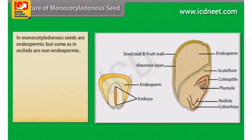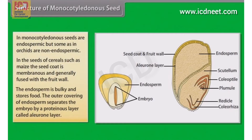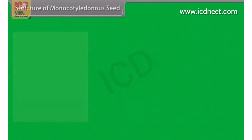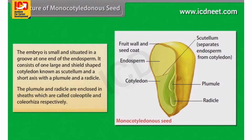Monocotyledonous seeds are endospermic, but some, as in orchids, are non-endospermic. In the seeds of cereals such as maize, the seed coat is membranous and generally fused with the fruit wall. The endosperm is bulky and stores food. The outer covering of endosperm separates the embryo by a proteinous layer called the aleurone layer. The embryo is small and situated in a groove at one end of the endosperm. It consists of one large shield-shaped cotyledon known as the scutellum and a short axis with a plumule and a radicle. The plumule and radicle are enclosed in sheaths called coleoptile and coleorhiza respectively.